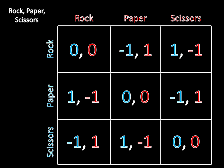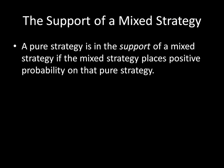In order to do that, we have to be able to talk about how a player can mix among two, three, four, five, or six or however many strategies. This video is the first step in that direction, talking about what the support of a mixed strategy is. A pure strategy is in the support of a mixed strategy if the mixed strategy places positive probability on that pure strategy. The support references all the pure strategies for which this holds.